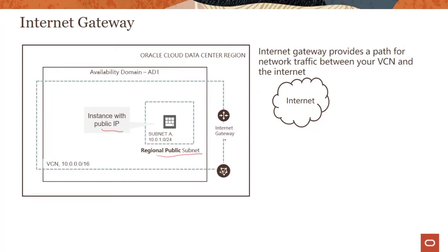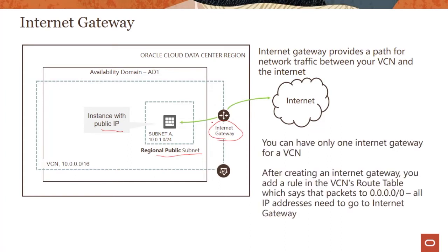We create this thing called internet gateway — it's a managed service, so you don't need to worry about bandwidth or high availability; all that is taken care of by Oracle. Using that gateway, packets can go in and out to the instance in the public subnet. You can only have one internet gateway for a VCN. If you have different public subnets — for bastion servers, web servers, etc. — all of them go through the single internet gateway available for the VCN.